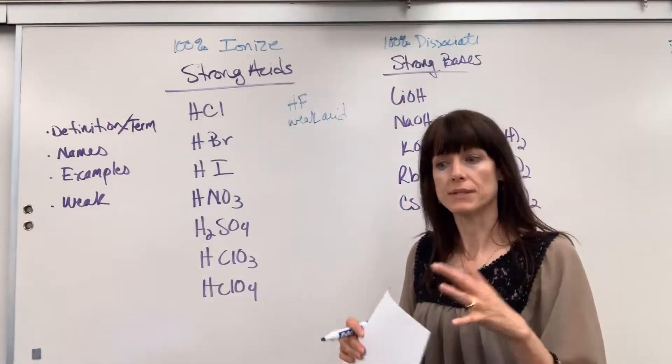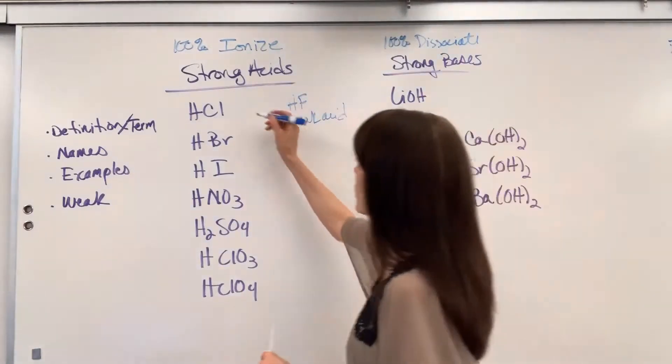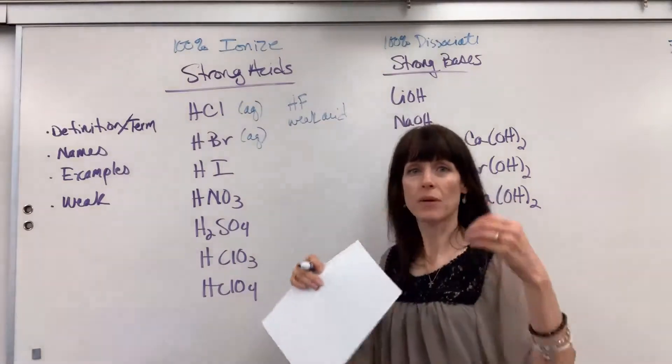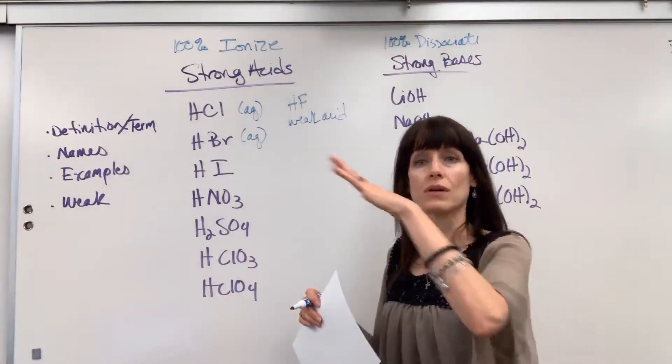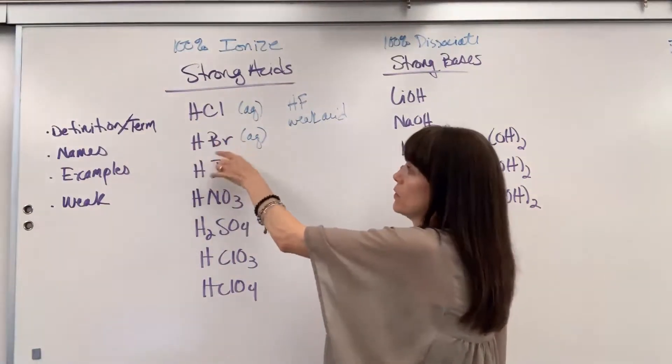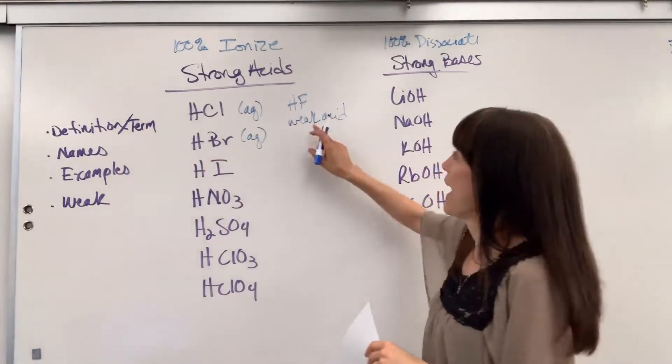When you are doing double replacement reactions, and you'll see aqueous on all of these, these will break apart when you do your complete ionic equation. So I would write H plus Cl minus. HBr plus Br minus. However,